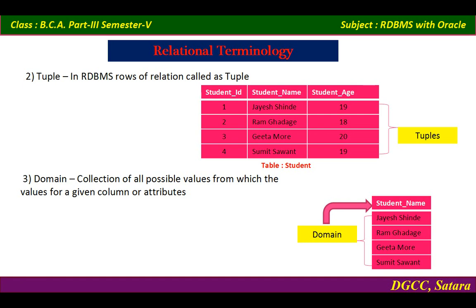The second relational terminology is 'tuple.' In RDBMS, a row of a relation is called a tuple. For example, one tuple reads: student_id = 1, student_name = Jay Shinde, student_age = 19. The student table has four tuples in total, meaning all four rows together form the complete set of tuples.